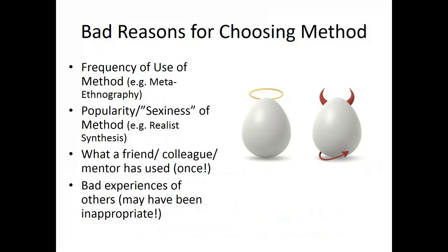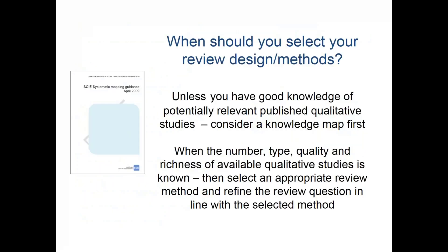The bad reasons for choosing a method include the frequency of use — such as metaethnography, because everybody else is using it. Or the popularity of methods like realist synthesis — it's quite new so I should use it without perhaps even understanding it. Or because a friend, colleague or mentor once used it. You need a proper framework for choosing your methods, and I hope we've given you a more systematic approach for choosing the right method.